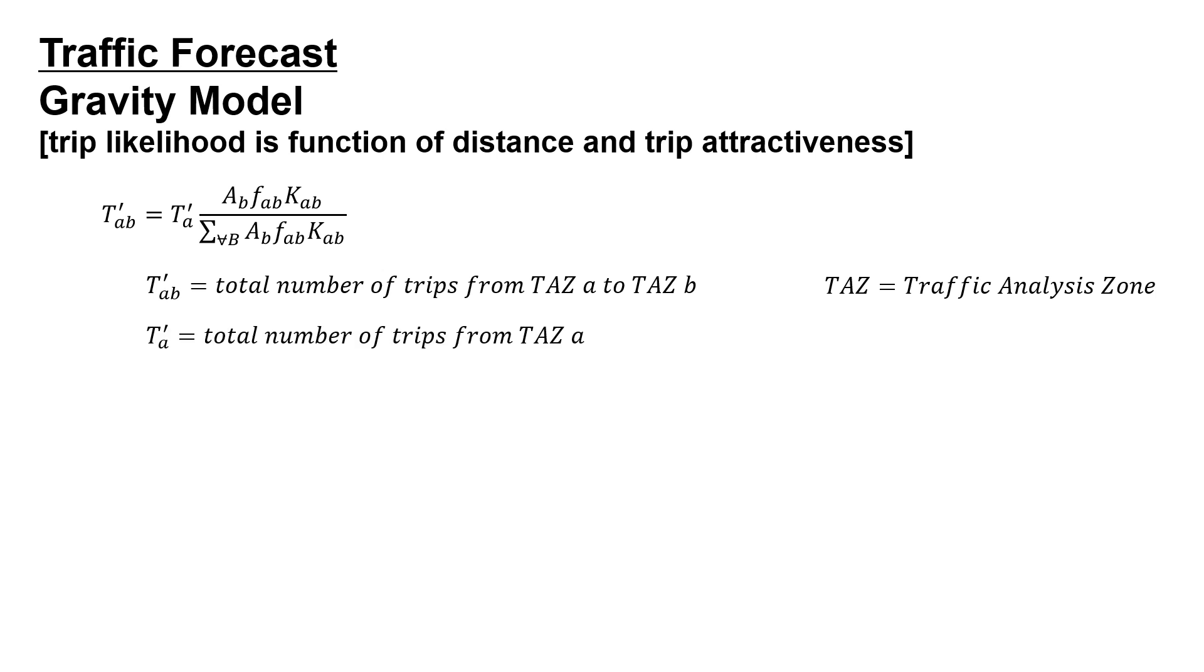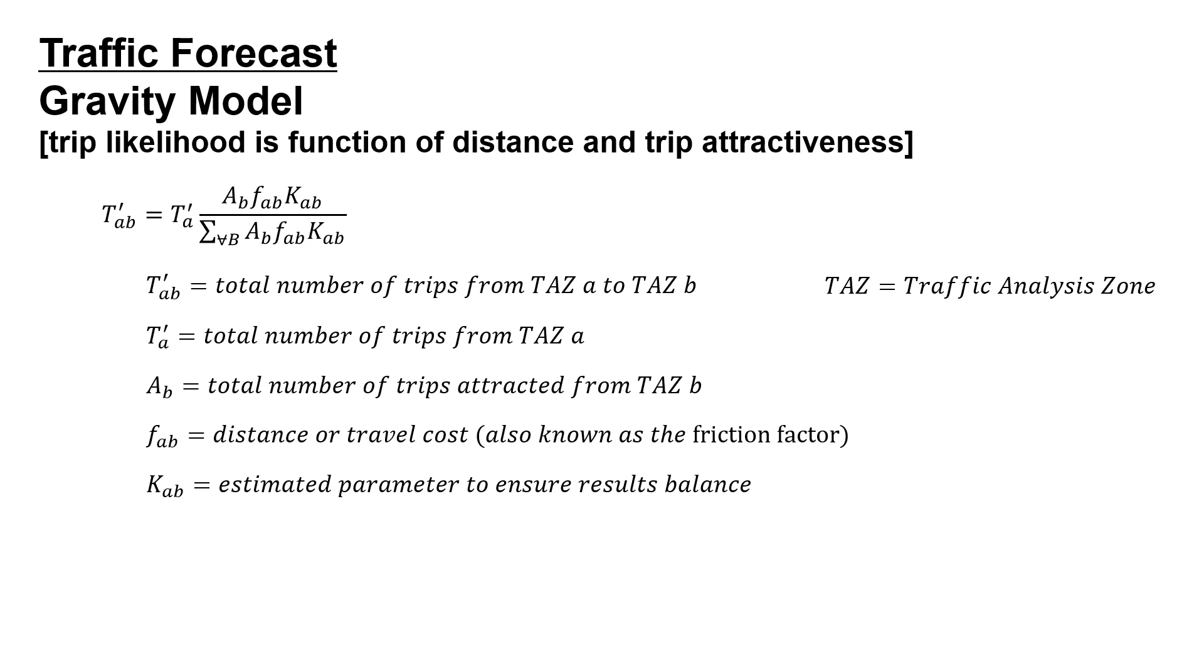We're going to incorporate the number of trips from TAZ A and use variables including the total number of trips attracted from TAZ B, the distance or travel cost which is also known as the friction factor, and the estimated parameter to ensure the results balance which is also known as the socioeconomic factor.